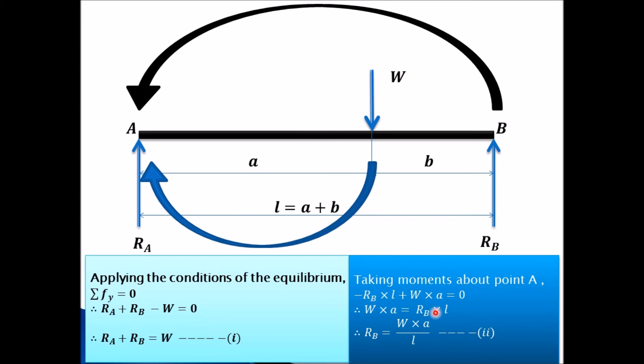Transfer this negative term on the right-hand side. It will become positive. Therefore we'll get RB is equal to W into a divided by L.